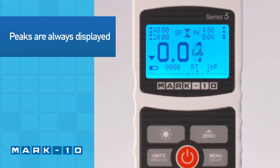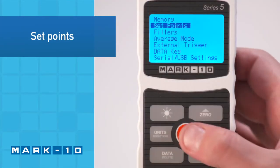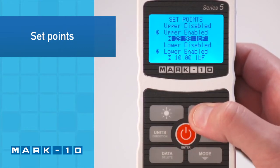Regardless of the mode, the tension and compression peaks are always shown in the upper right corner of the display. Upper and lower set points, shown in the upper left corner, may be configured for pass-fail testing.